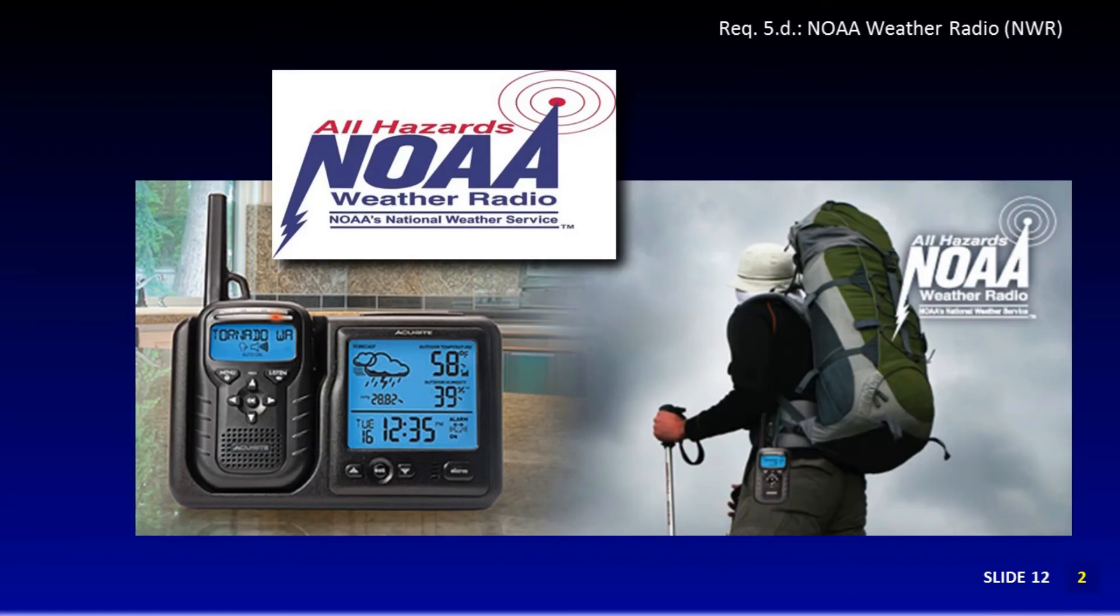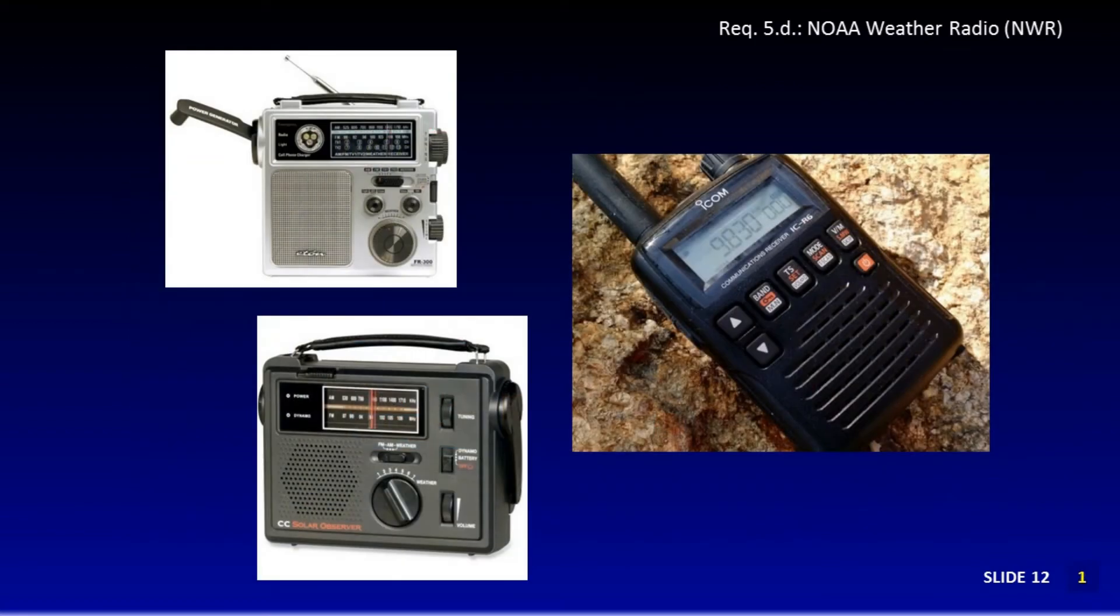NOAA Weather Radio is a network of radio stations in the United States that broadcasts continuous weather information directly from a nearby weather forecast office. NOAA Weather Radio broadcasts National Weather Service warnings, watches, forecasts, weather observations, and other hazard information 24 hours a day. It also broadcasts alerts on non-weather emergencies such as national security, natural, environmental, or public safety throughout the U.S. This is managed under the Federal Communication Commission's Emergency Alert System. There are many special radios designed to receive NWR broadcasts. One of these radio receivers could be a great addition to your home emergency kit.